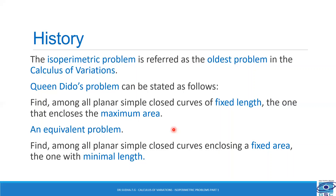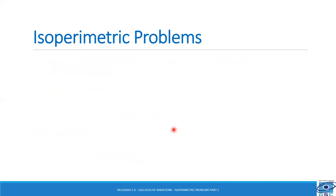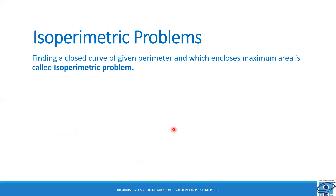Zenodorus proved that a circle has greater area than any polygon with the same perimeter. His work was lost; we now have it mainly through Pappus and Theon of Alexandria. Pappus's introduction to the subject is considered a literary masterpiece. Zenodorus proved that for regular polygons with the same perimeter, more sides imply greater area, and any figure with maximal area must be a circle. Finding a closed curve of given perimeter which encloses maximum area is called the isoperimetric problem.